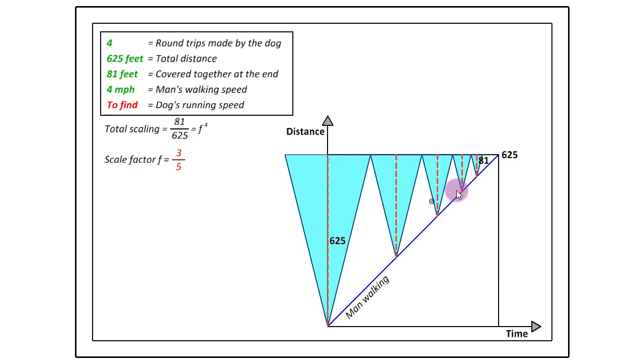And if we use this scale factor, then we can find the successive altitudes. So 3/5 of 625 would be 375. 3/5 of that would be 225. 3/5 of that would be 135 and so on.